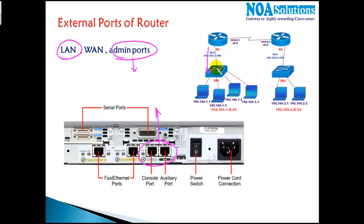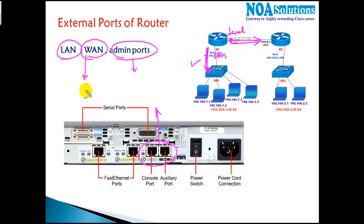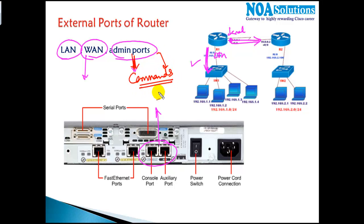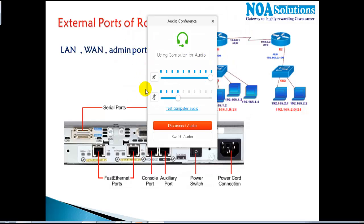The LAN port connects to the LAN and forwards your traffic. The WAN port connects to the WAN — typically your serial ports and Ethernet/Fast Ethernet ports. These ports are responsible for sending and receiving data traffic. Administrative ports, by contrast, don't carry any data traffic; they carry commands for configuration and administration of the router.